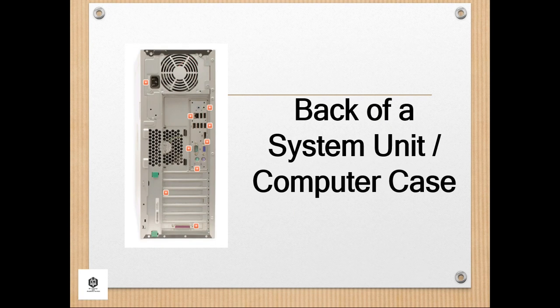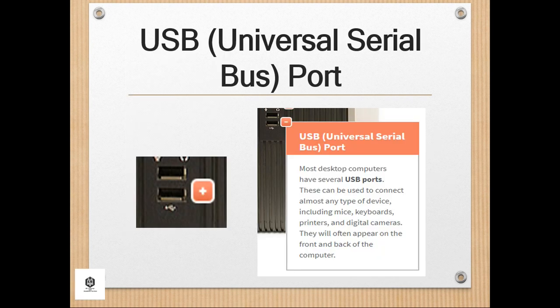Next are the USB (Universal Serial Bus) ports. Most desktop computers have several USB ports that can be used to connect almost any type of device, including mice, keyboards, printers, and digital cameras. These ports often appear on both the front and back of the computer.